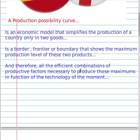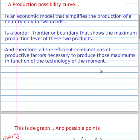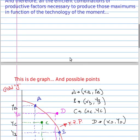It is a border, frontier, or boundary that shows the maximum production level of these two products. Therefore, all the efficient combinations of productive factors necessary to produce those maximums are in function of the technology of the moment. Very important.